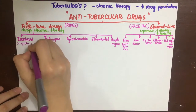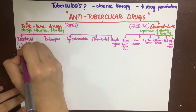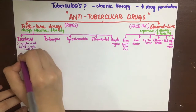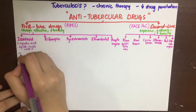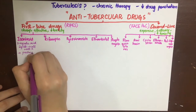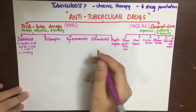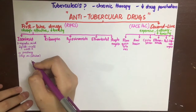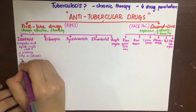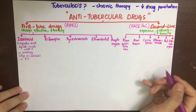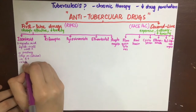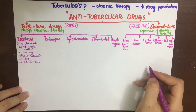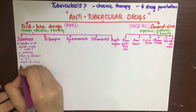Coming to the first drug, isoniazid — it acts by inhibiting mycolic acid synthesis, which is an essential part of the cell wall of Mycobacterium tuberculosis. Isoniazid is a prodrug that depends upon a bacterial catalyst for its activation. The bacteria can mutate or inactivate the kat gene, becoming resistant by not activating the drug into its active form.